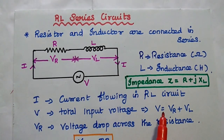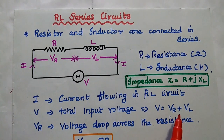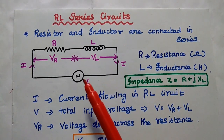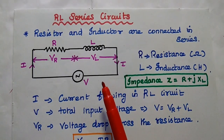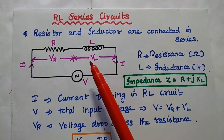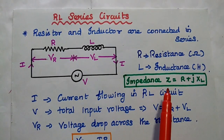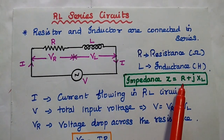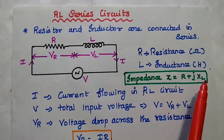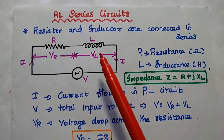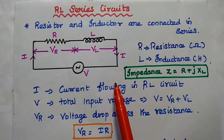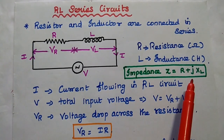The total voltage is equal to the sum of the voltage drop across the resistor and the voltage drop across the inductor. There is one more term — impedance. The impedance of the series circuit is Z, which is equal to R plus jXL, where XL is the inductive reactance of the inductor. So the impedance of the circuit is R plus jXL.